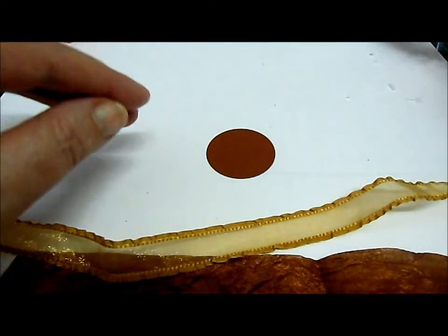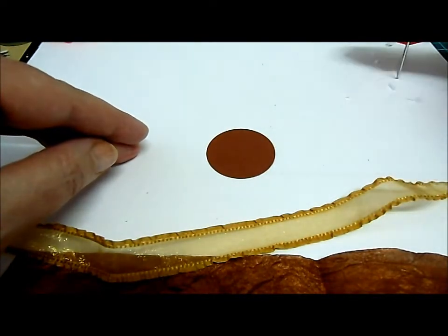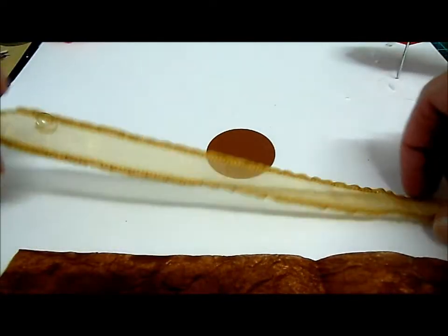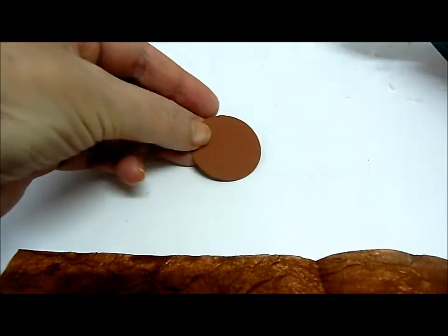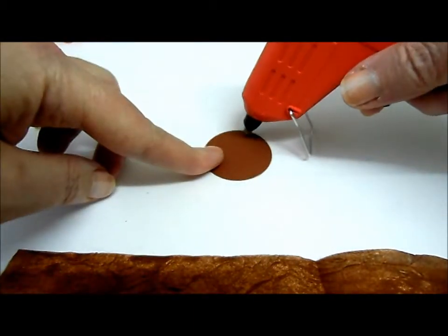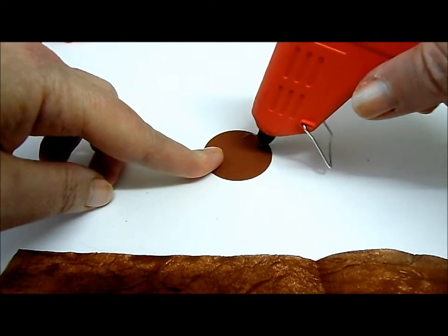I'm going to use a glue gun and I've got it on the lowest setting purely because I don't want to burn my fingers. So let's get started with it. I've cut a disc of card and I'm going to add a dot of glue onto the card.